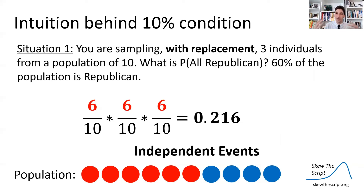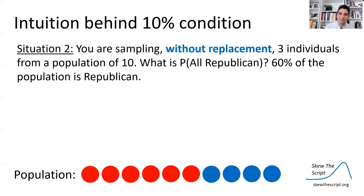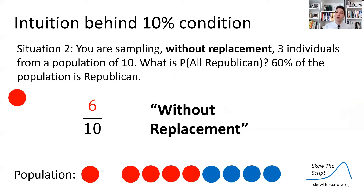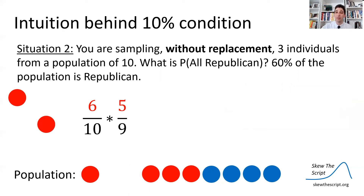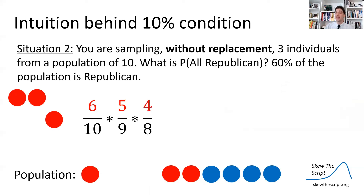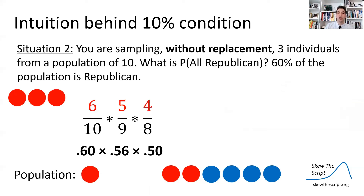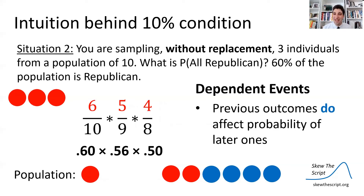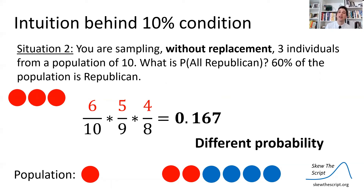Now imagine sampling without replacement. We get one Republican — probability 6/10 — but then put them aside. Now the probability of sampling another Republican becomes 5 out of 9 remaining people. Do it again: the probability is 4 out of 8. Note these are dependent events — previous outcomes affect later probabilities because there's no replacement. If we multiply those probabilities, we end up with a different probability of getting three Republicans in our sample.